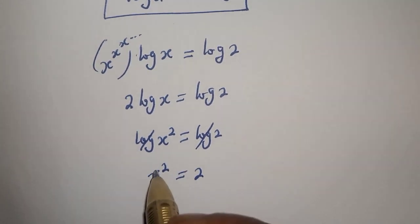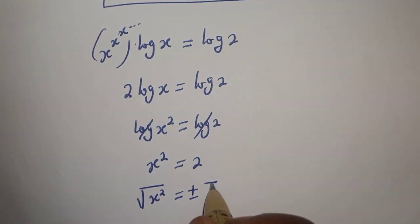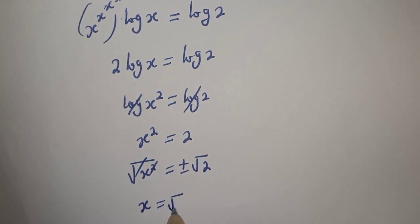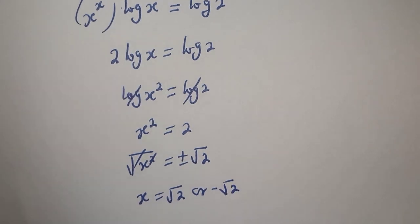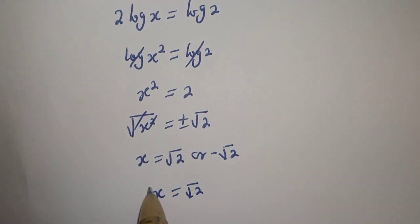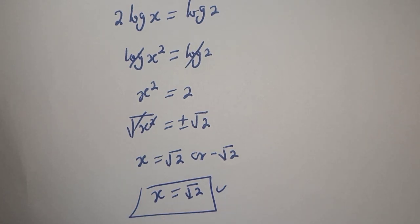Now let's take the square root of both sides. The square root of s² equals plus or minus the square root of 2, so s = √2 or s = −√2. Therefore our final answer is s = √2, which is the only positive solution. Thank you for watching — if you enjoyed the class, please don't forget to like, share, comment, and subscribe.